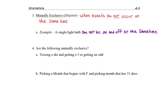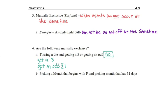Case 4A: if you toss a die — singular for dice — and the events are getting a 3 or getting an odd number, are these mutually exclusive? No. Getting a 3 is one specific outcome, and getting an odd means 1, 3, or 5. Since 3 appears in both cases, the two events are not mutually exclusive.